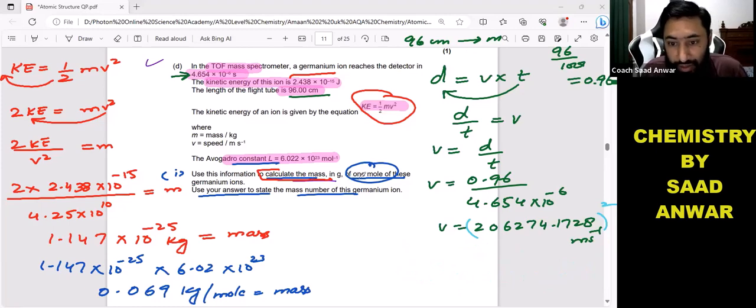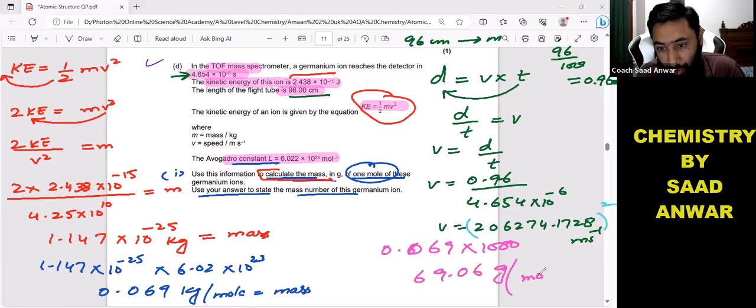This is in kilograms, so I need to convert this into grams. I have to multiply this with 1000. So 0.069, just multiply this with 1000. The answer would be 69.06 grams per mole.